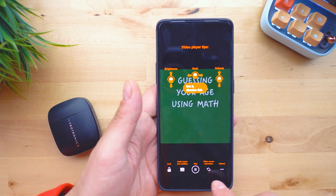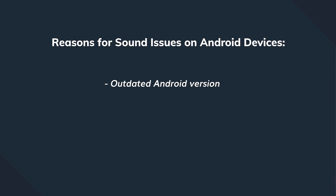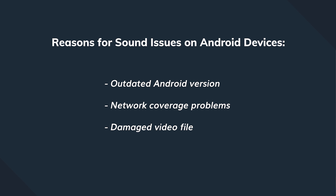We have a few solutions to fix that condition, but first let's discuss the possible reasons why this happens. Generally, when it comes to video playback — mostly concerning streaming online videos — there are three major reasons: first, your operating system is outdated; secondly, it could be a network coverage issue; and thirdly, the video you're trying to watch could be damaged.